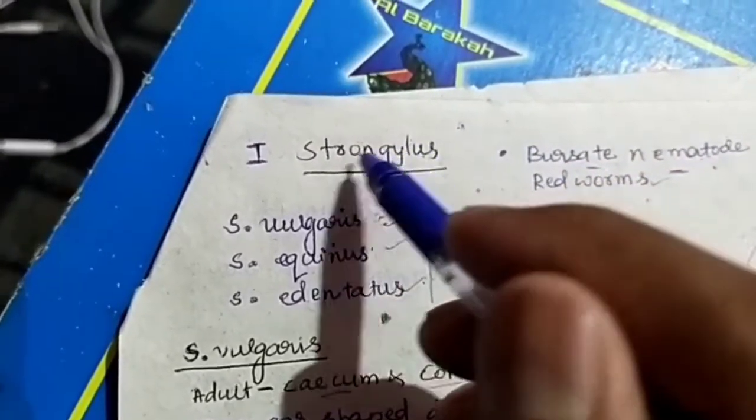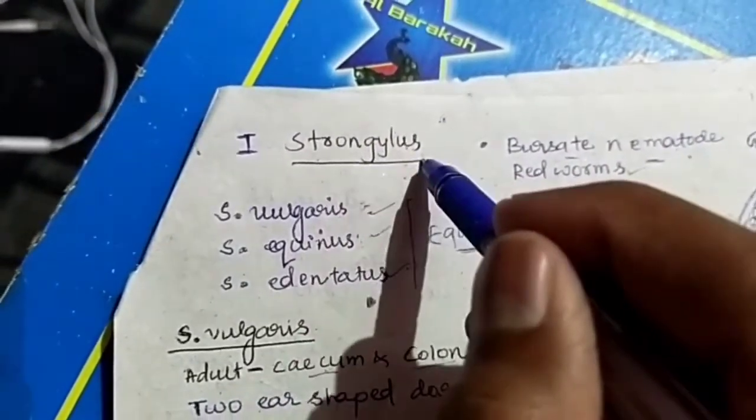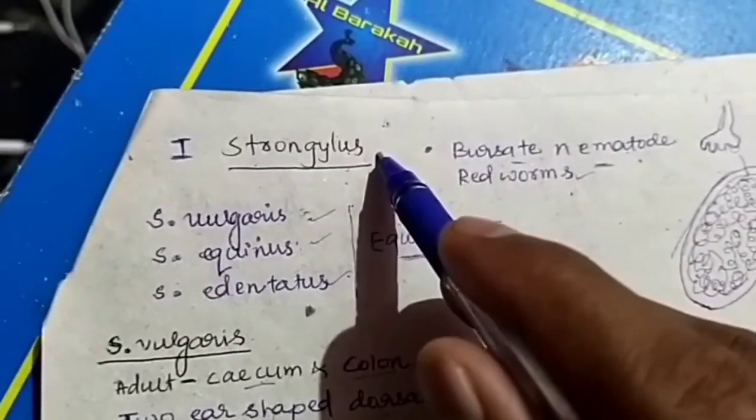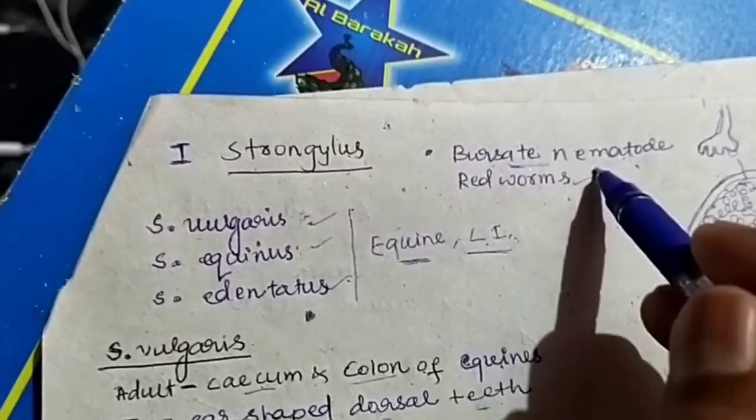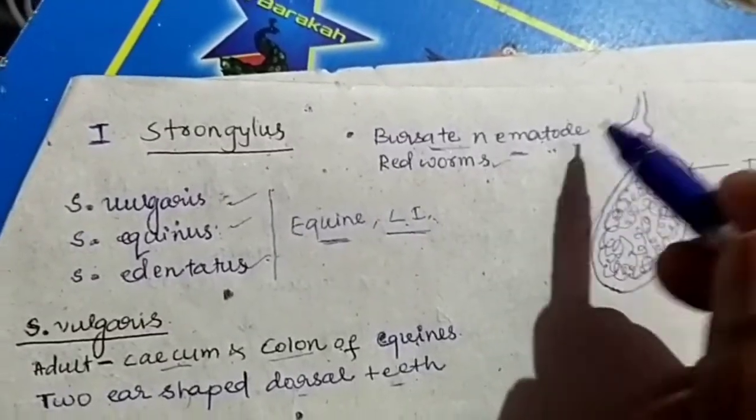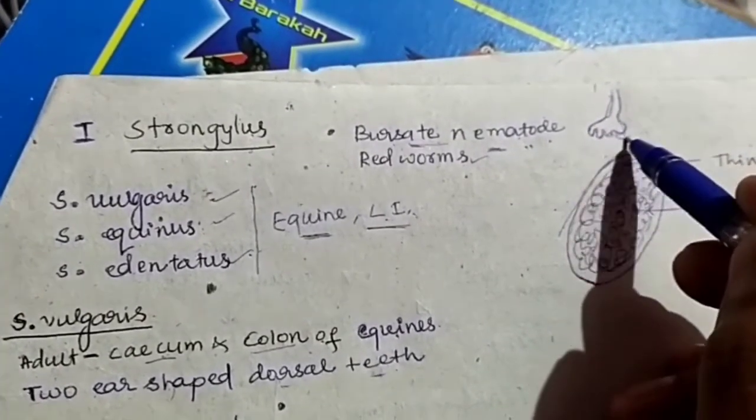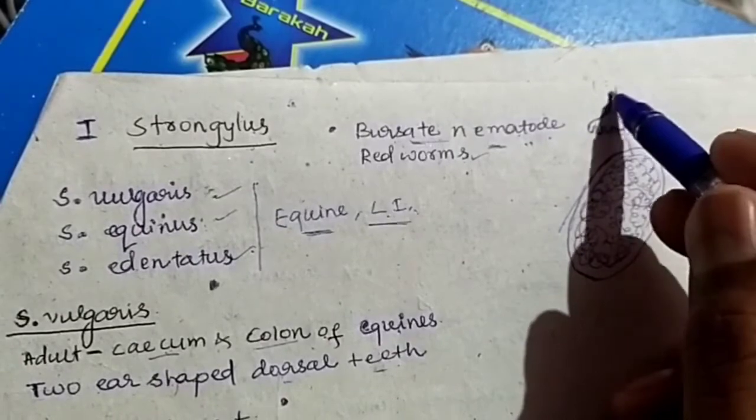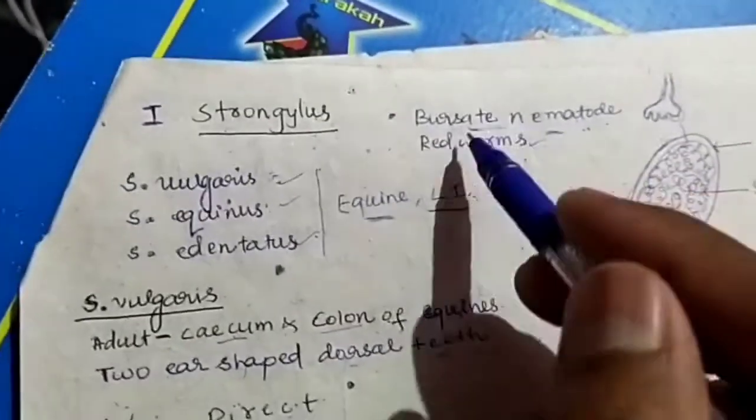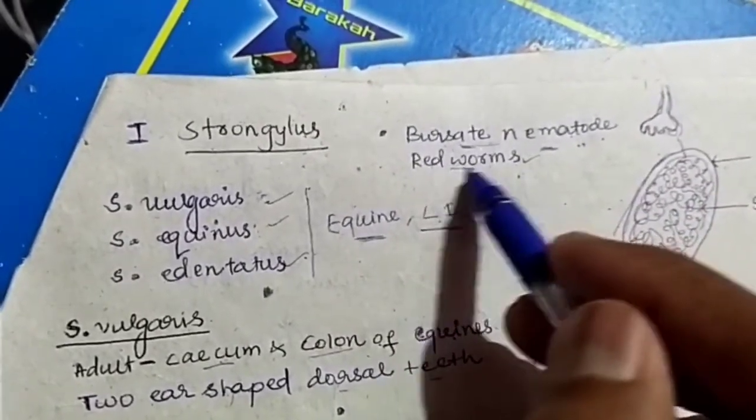In this video, we will discuss the genus Strongylus. The species of the genus Strongylus are also called burset nematodes because the male nematode has a bursal structure at the posterior end of the body, and these are also called redworms.